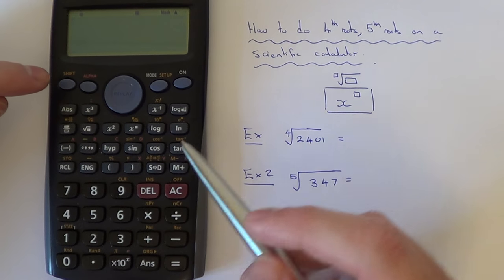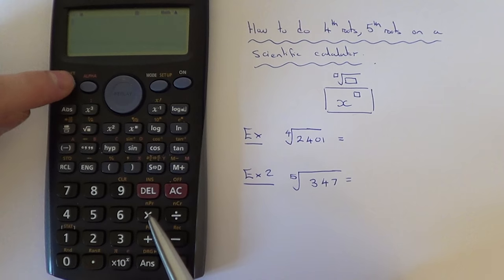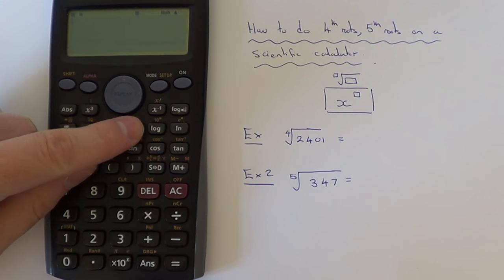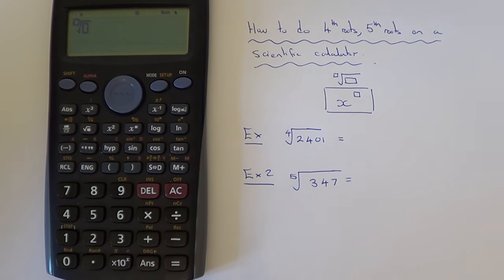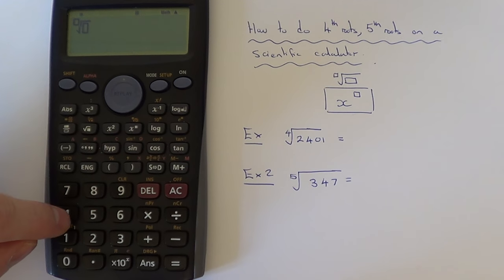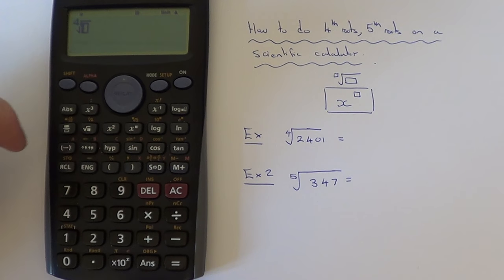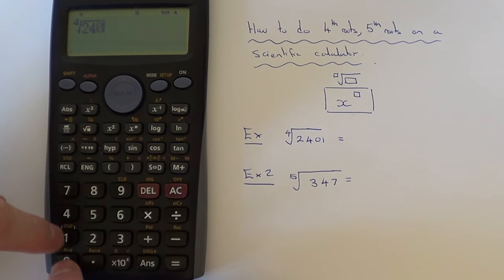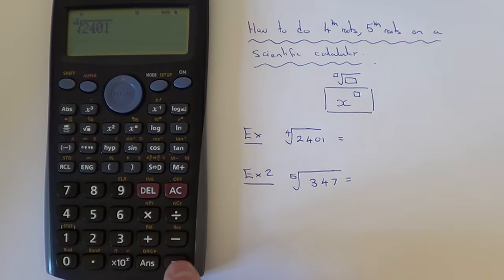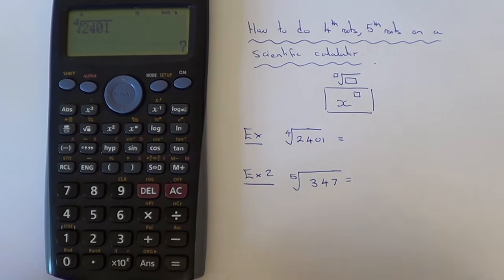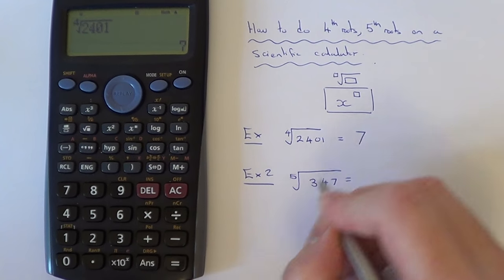If we press shift then the power key, you can see the root has come up there. Type the 4 in the little box there, use your cursor key to move it along, and then type in your number 2401. Hit your equals and that will give you an answer of 7.